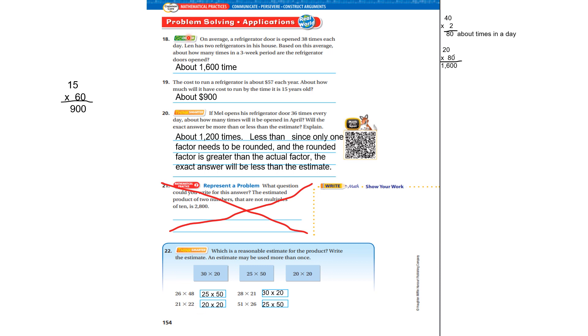So, if we look at this on average, if refrigerator doors open 38 times each day, Len has two refrigerators at his house. Based on this average, how many times in a three week period are the refrigerator doors open? Well, I'm going to say 38 is an estimate of 40 times two. It'd be about 80 times a day. A three week period is 21 days. So, I'm going to say 20 days as the estimate, and 20 times 80 is 1,600. So, it'd be about 1,600 times.